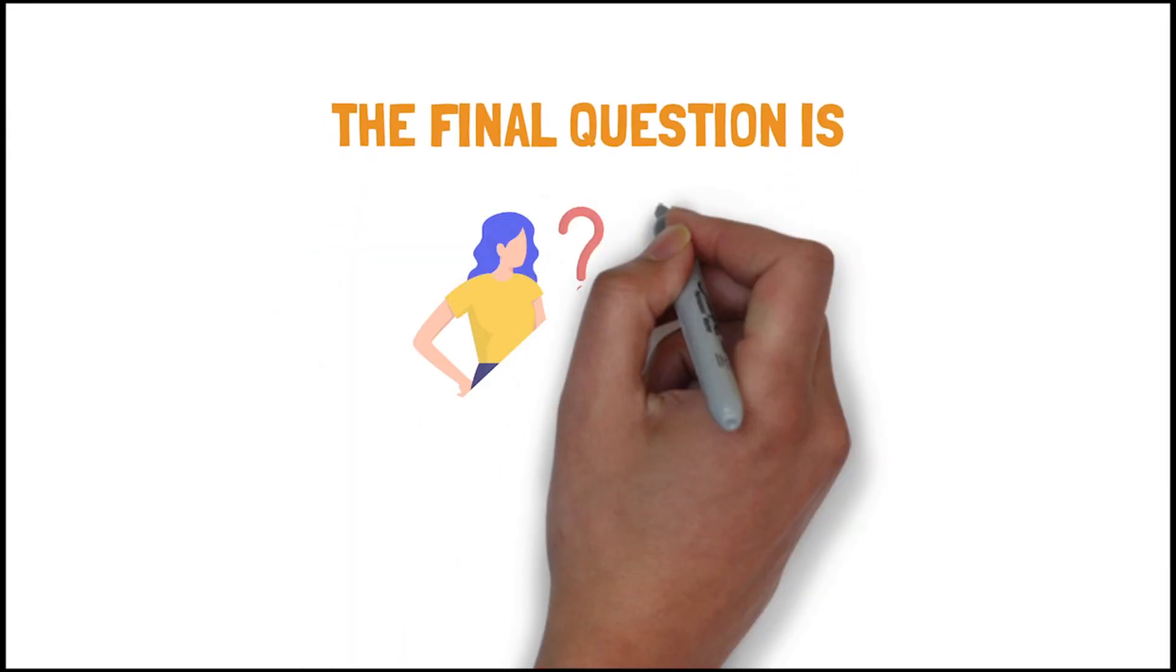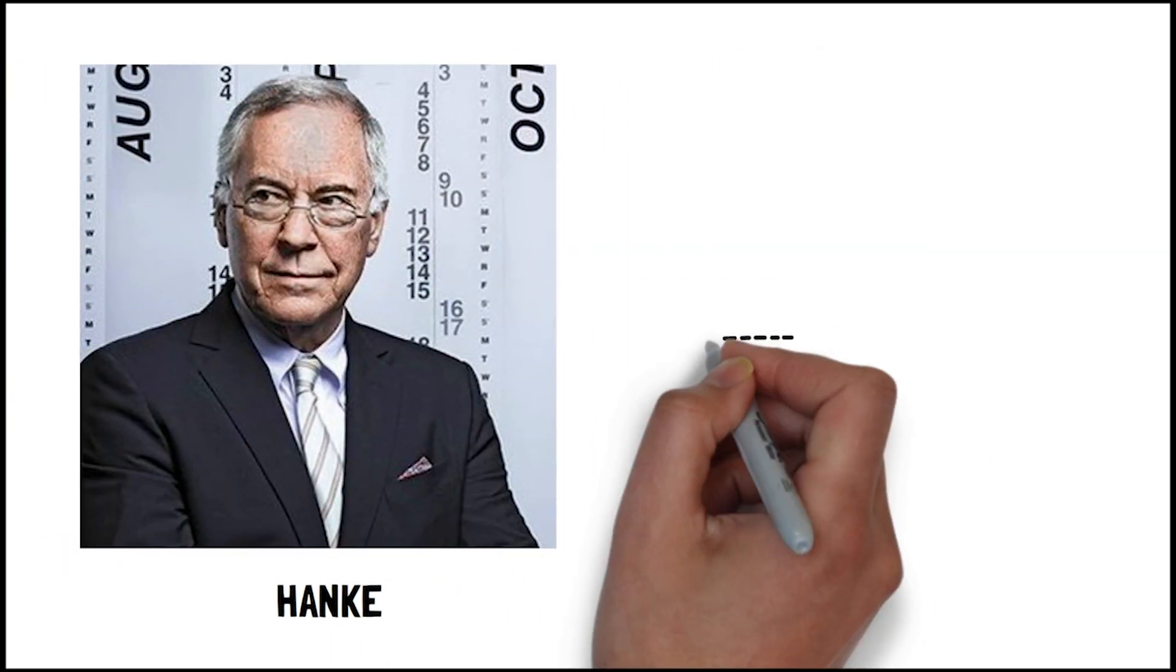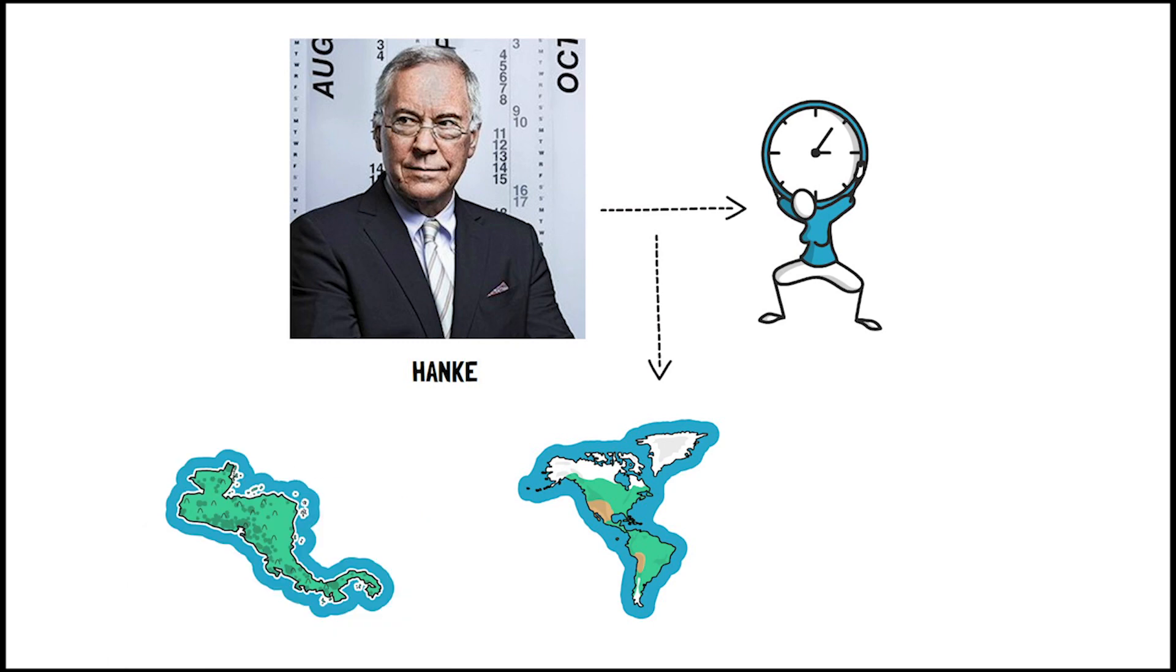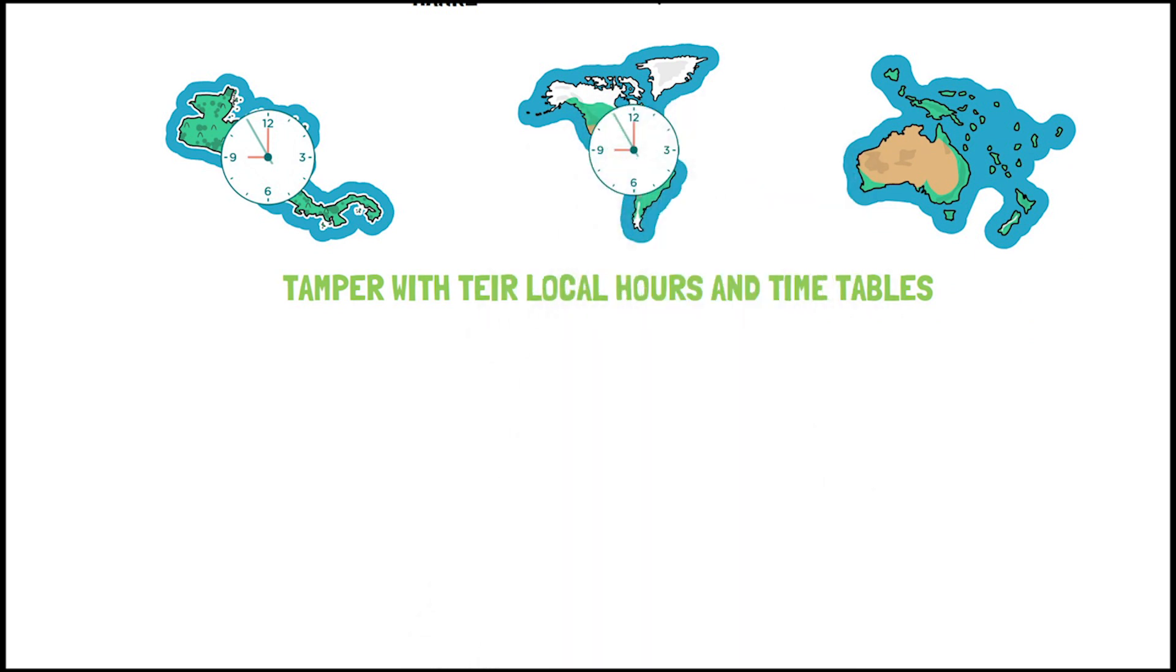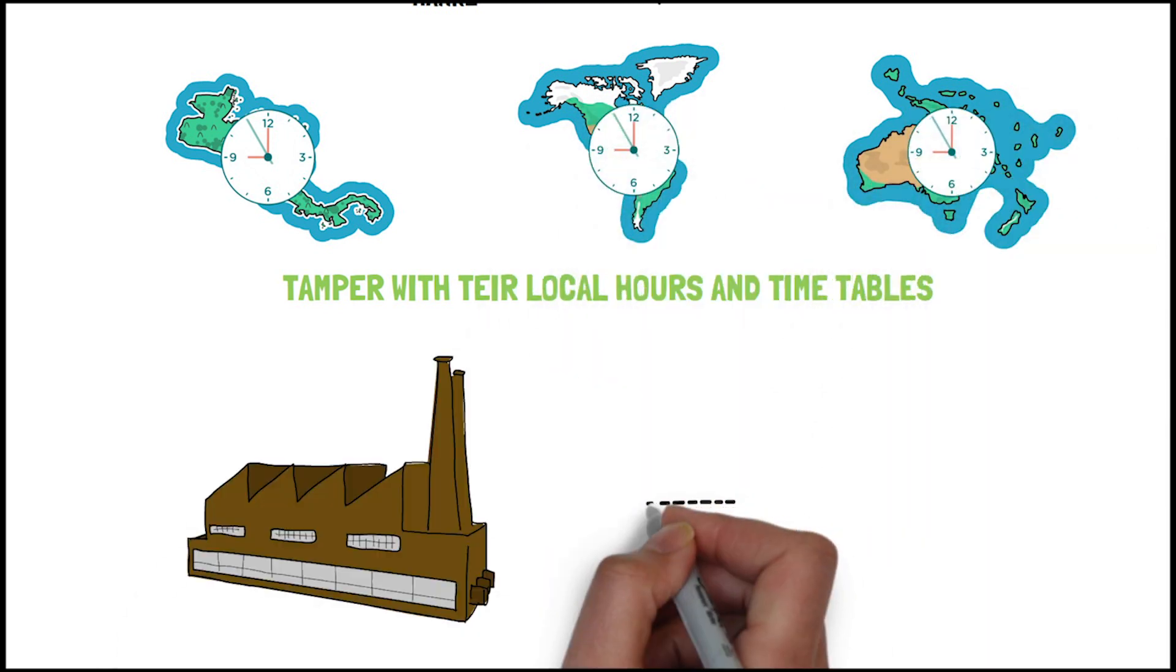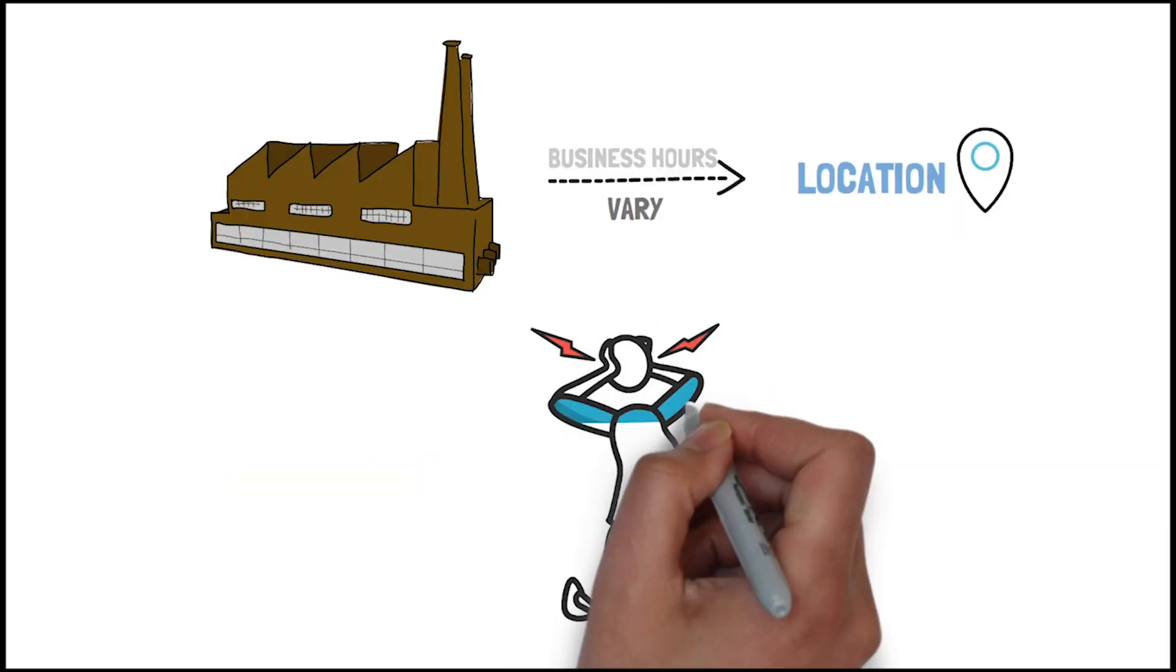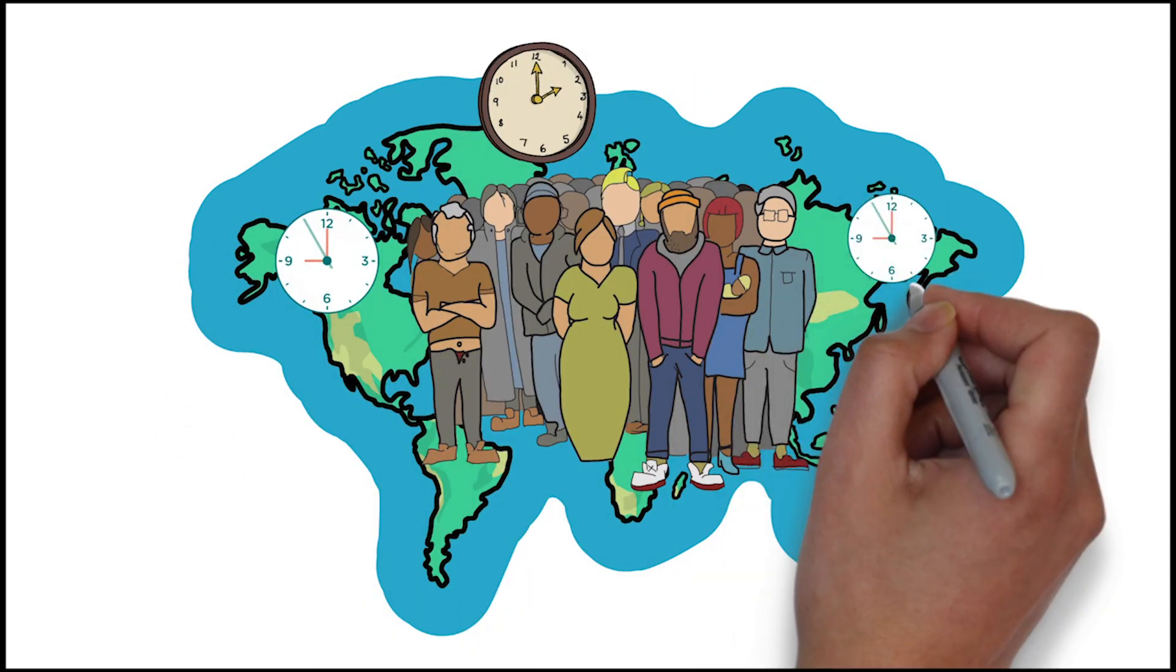So the final question is, could universal time solve some of these issues? Well, Hanke proposes that without the strictures imposed by a particular time zone, different locations would be free to tamper with their local working hours and timetables. Although all the clocks would be set to the same time, business hours would vary by location. But the upheaval it could cause is likely to undermine all such theories. People have adapted to this way of living, and from the looks of it, there are good chances that you have to live in a world with different time zones for longer than you imagine.